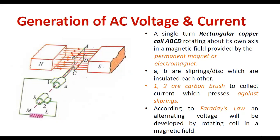Welcome to the playlist of Basic Electrical Engineering. In this session I'll be discussing how to generate AC voltage and AC current. First, consider the diagram — you can see the coil ABCD, which has a rectangular shape. You can also see the permanent magnet with north and south poles, and between them a group of magnetic lines called magnetic flux. Either a permanent magnet or an electromagnet can be used here.